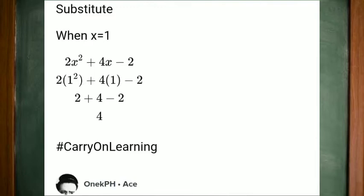Then 1 squared is also 1, so 2 times 1 is 2 plus 4 minus 2, giving us 4.